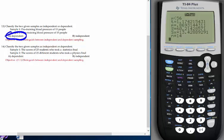Number 14. Classify the two given samples as independent or dependent. Sample 1: the scores of 25 students who took a statistics final and the scores of 25 different students who took a physics final. These two have nothing to do with each other, so they are independent.